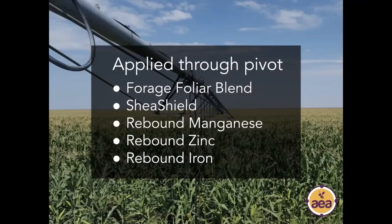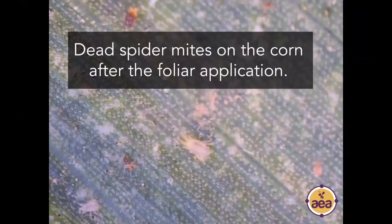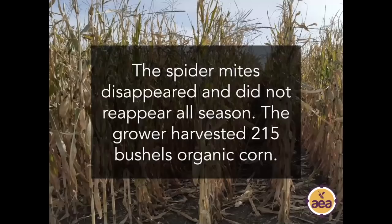They ran the pivot as rapidly as possible — I believe around 10,000 gallons per acre — and it took the pivot 48 hours to make the entire circle. When the crop scout came back 48 hours after the application, they observed that right where the circle started and the product had been first applied, the spider mites were dead. At the end of the circle where the product had just been applied a few hours previously, that was not yet the case. It seemed to take about 48 hours for the effect to become observable. The spider mites disappeared and did not reappear for the rest of the growing season. They ended up producing a yield of 215 bushels per acre of organic corn, and notably there were also no corn earworm, no corn borer — no other insect pressure on this crop at all.